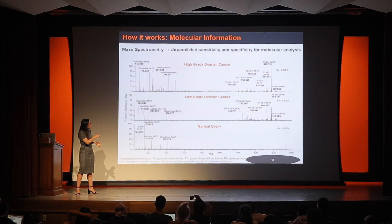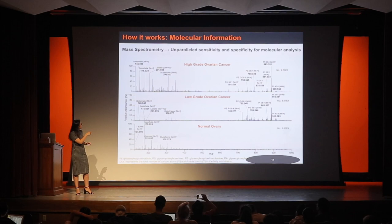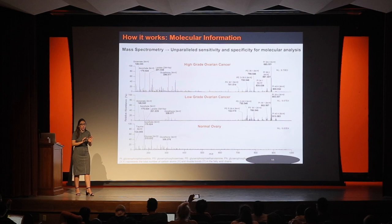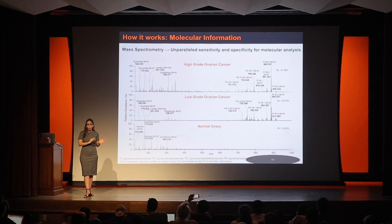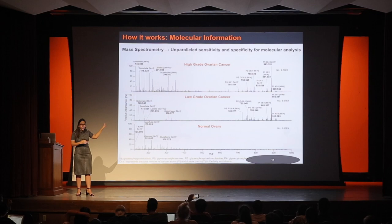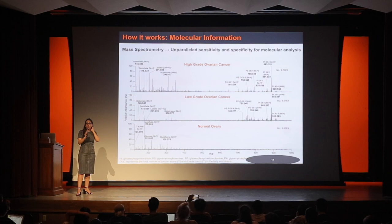By looking at these profiles of molecules, we can rapidly identify if the pattern is characteristic of a high-grade ovarian cancer, a low-grade ovarian cancer, or normal ovary. Even if you didn't know anything about mass spectrometry, just based on pattern recognition — and this is highly reproducible — you'd be able to tell that these are different tissues. If you do enough analysis with a large number of samples, you can derive statistically significant patterns of molecules that are characteristic of each disease type.